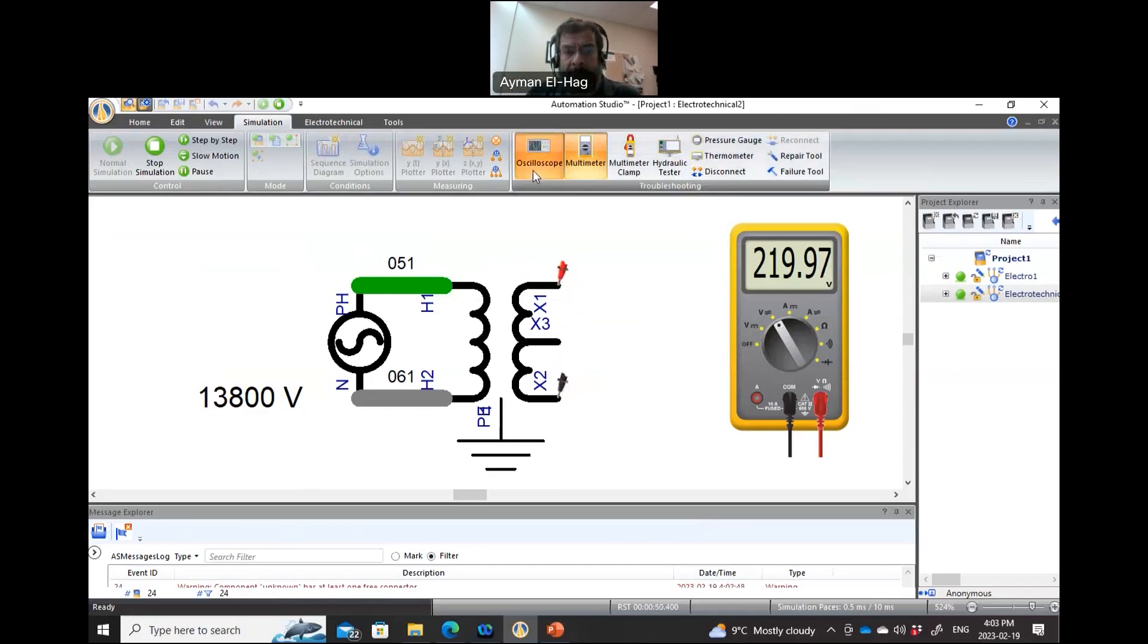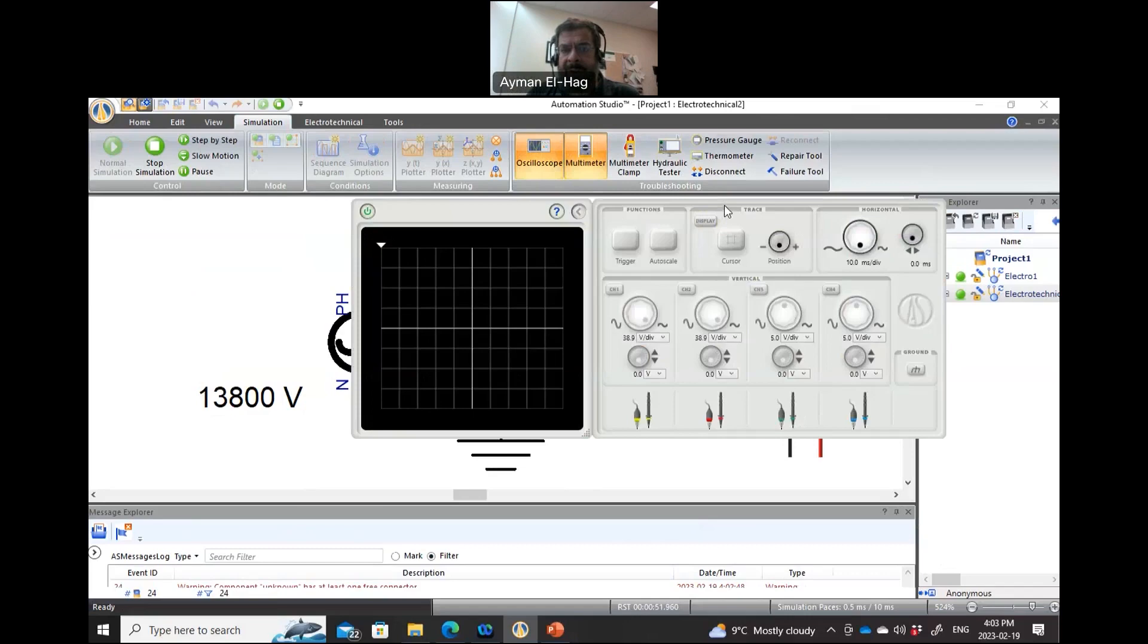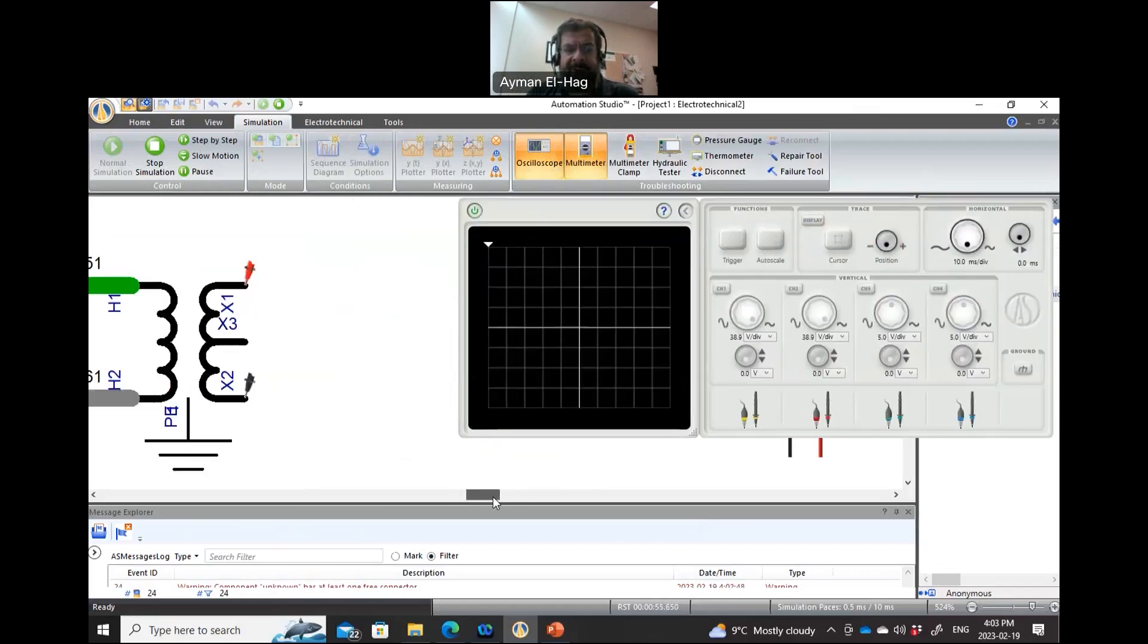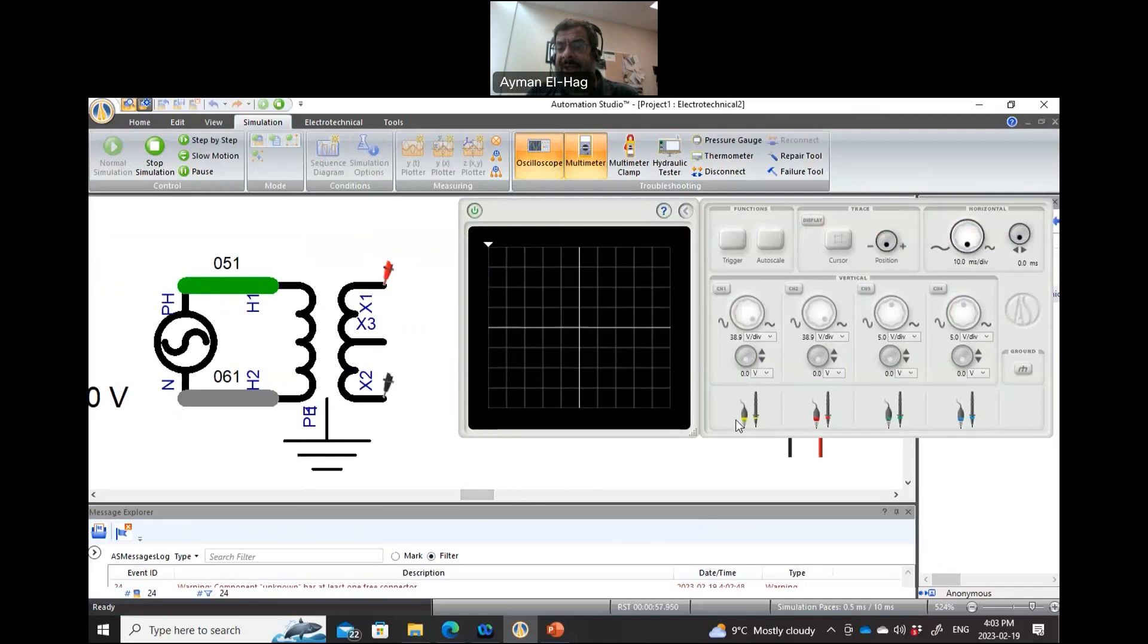Now let me just bring the oscilloscope and show you something also about these voltages. This voltage will be 180 degree phase shift from each other. So let me connect. Now let me just disconnect my multimeter and let me connect the oscilloscope.